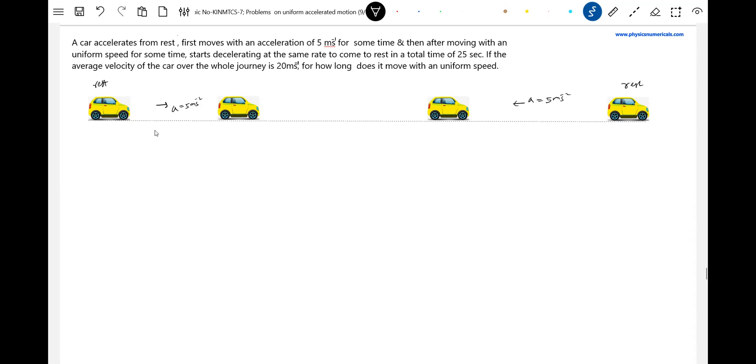It will move with uniform speed for some distance. So this distance - acceleration, then uniform, then retardation. Total time is given, average velocity is given. So this distance covered, let it be S1, S2, S3.